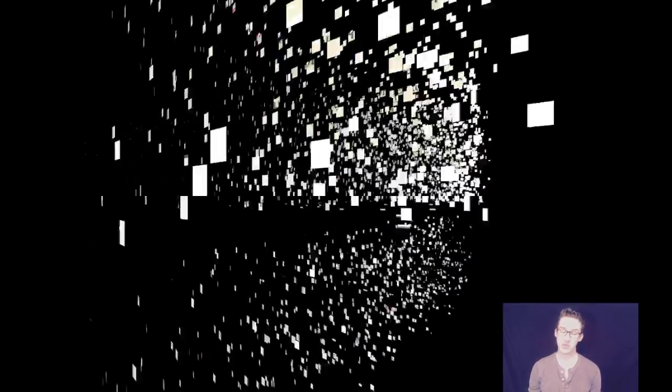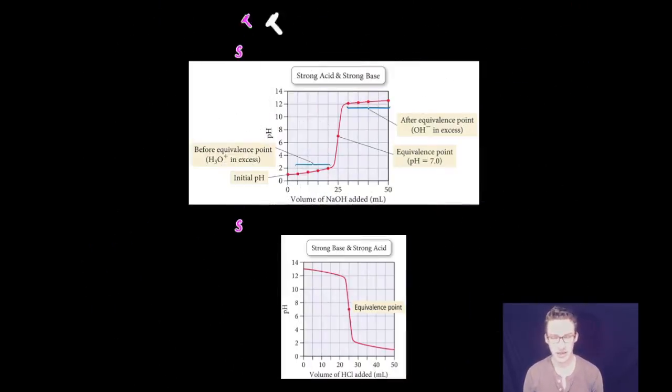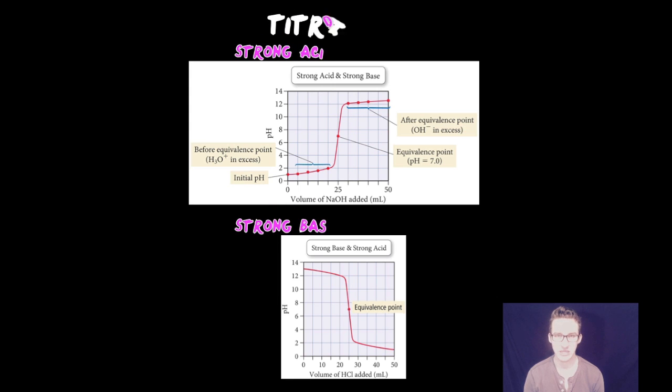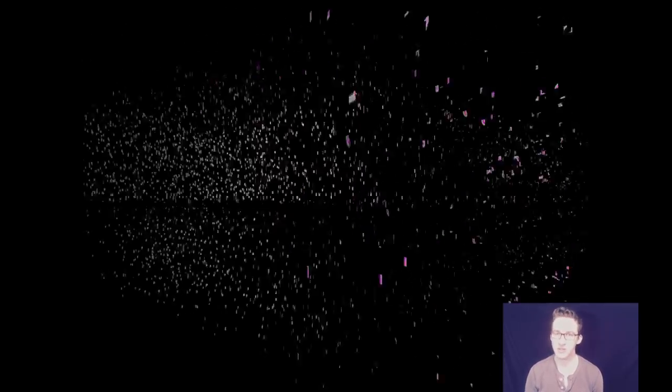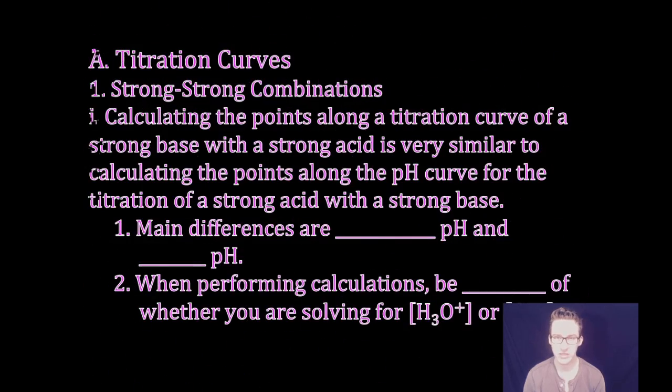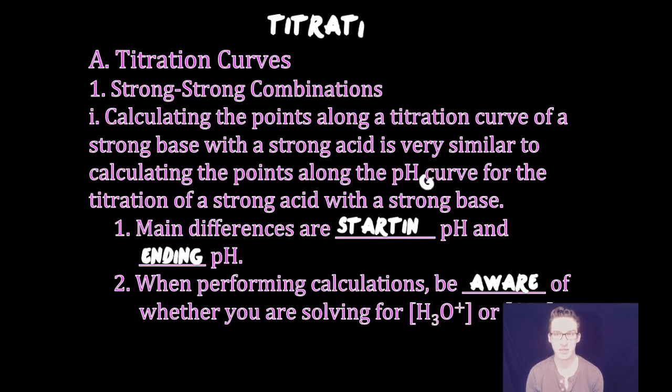The first thing we'll look at are strong-strong combinations. These are some of the easier ones to deal with when thinking about strong acid-strong base titrations. The pH calculations at different points along a titration curve are very similar.